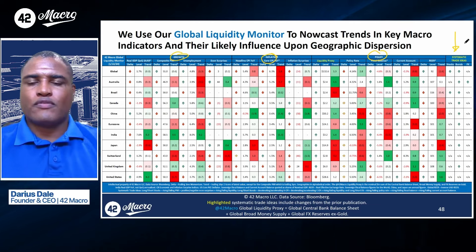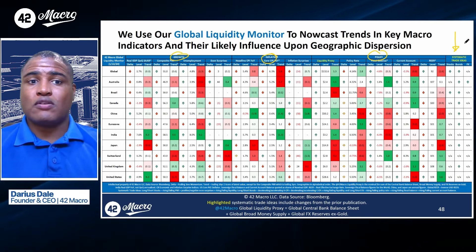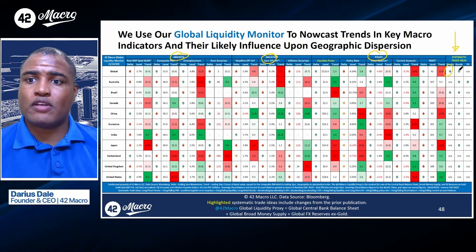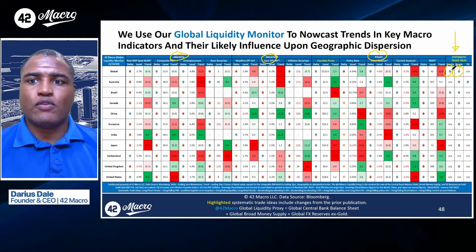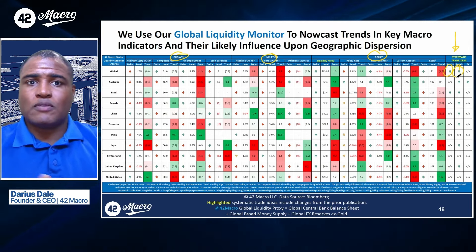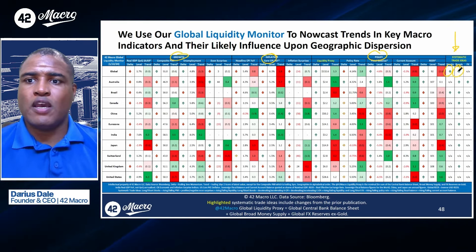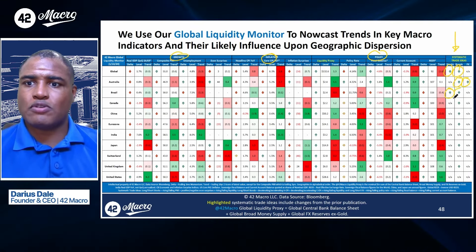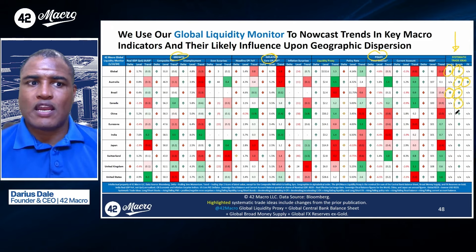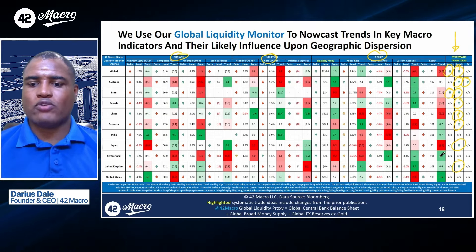One thing I call out is that for those of you running global money, the current constellation of the growth, inflation, and policy signals from a global standpoint support still being long global equities and global rates. In terms of the deltas between growth, inflation, and the key indicators, the model likes Aussie bonds, it likes the Aussie dollar, Brazilian stocks and Brazilian bonds. And then it likes Canadian bonds, Chinese bonds, eurozone bonds — that's German bunds — Japanese government bonds, and UK gilts. So that's obviously a lot of arrows there.